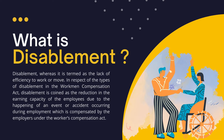Disablement is termed as the lack of efficiency to work or move. In respect of the Workmen's Compensation Act, disablement is defined as the reduction in earning capacity of the employee due to the happening of an event or accident which occurred during employment, which is compensated by the employers under the Workers' Compensation Act.